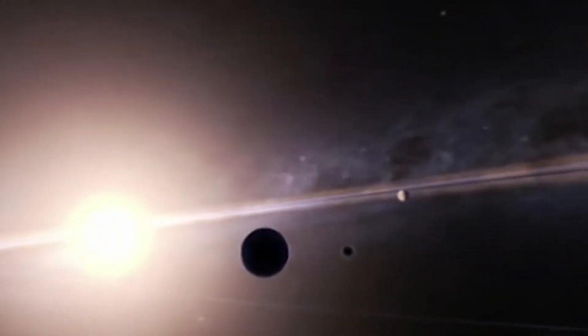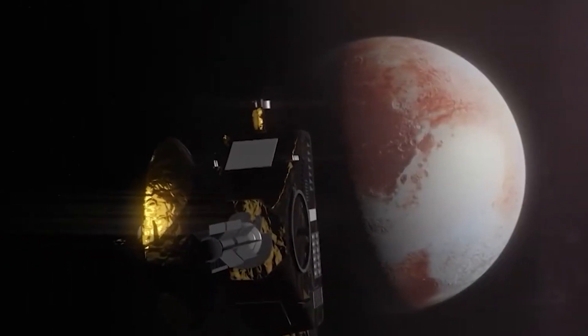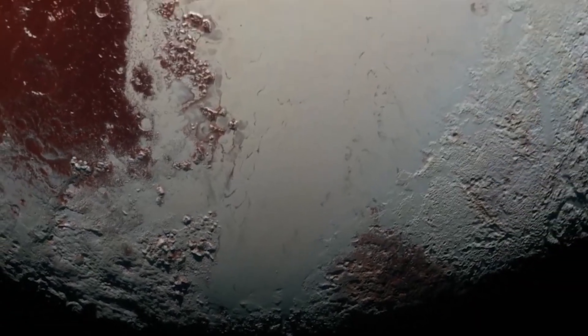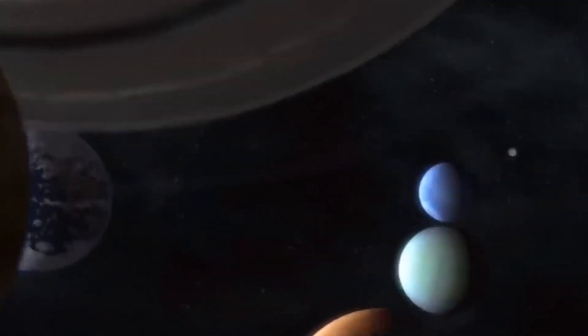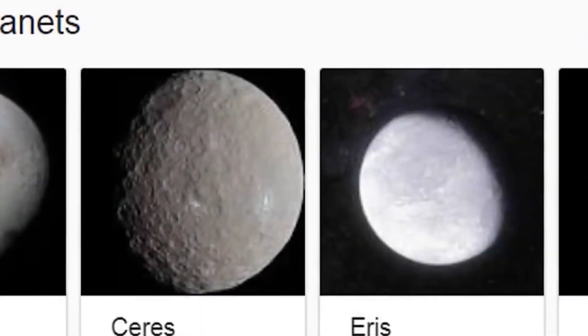The International Astronomical Union defines a planet as a celestial body that orbits the sun and has sufficient gravity to prevent other objects from entering or leaving its orbit. Since Pluto is both spherical and has an orbit around the sun, it satisfies the first two requirements. The pull of Neptune's gravity, however, affects Pluto.